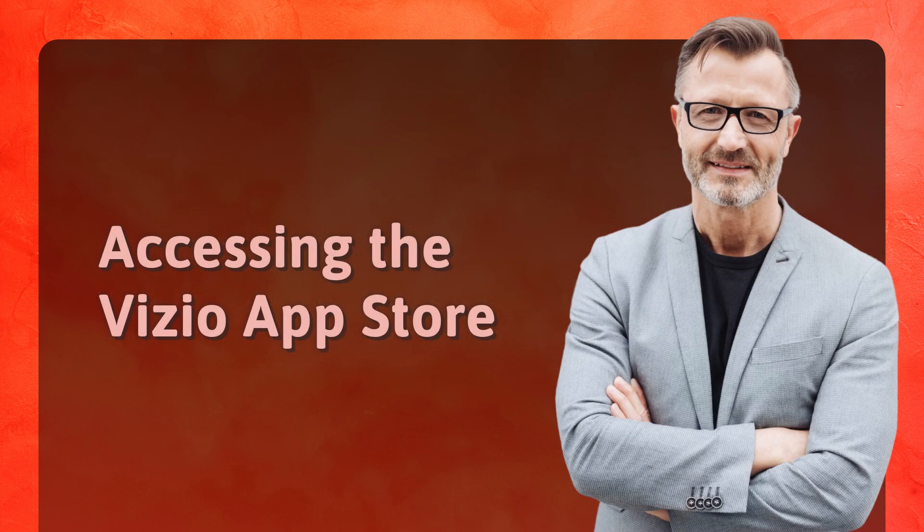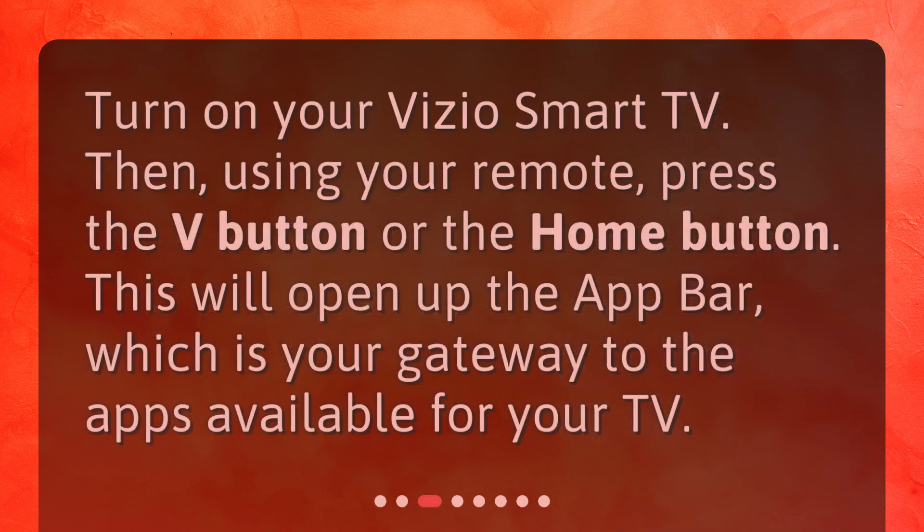Accessing the Vizio App Store. Turn on your Vizio Smart TV. Then, using your remote, press the V button or the Home button. This will open up the app bar, which is your gateway to the apps available for your TV.